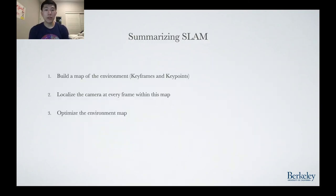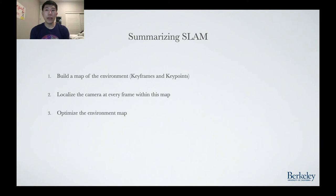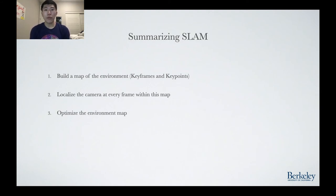To summarize SLAM, we have three steps that are performed continuously throughout the running of a SLAM application. A map of the environment in the form of keyframes and keypoints is constantly being added to and generated as more of the real scene is explored by the camera. The camera is localized at every frame within this map of the environment. Finally, loop closures are performed when returning to a previous point in the scene, re-optimizing the position of the camera and the map of the environment.